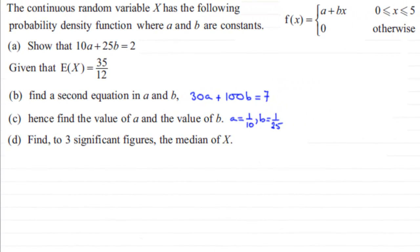Hi. Now in this next part, Part D, we've got to find to three significant figures the median of x. And you'll notice I've updated the values of a and b that we found in Part C. a is 1/10, b is equal to 1/25.